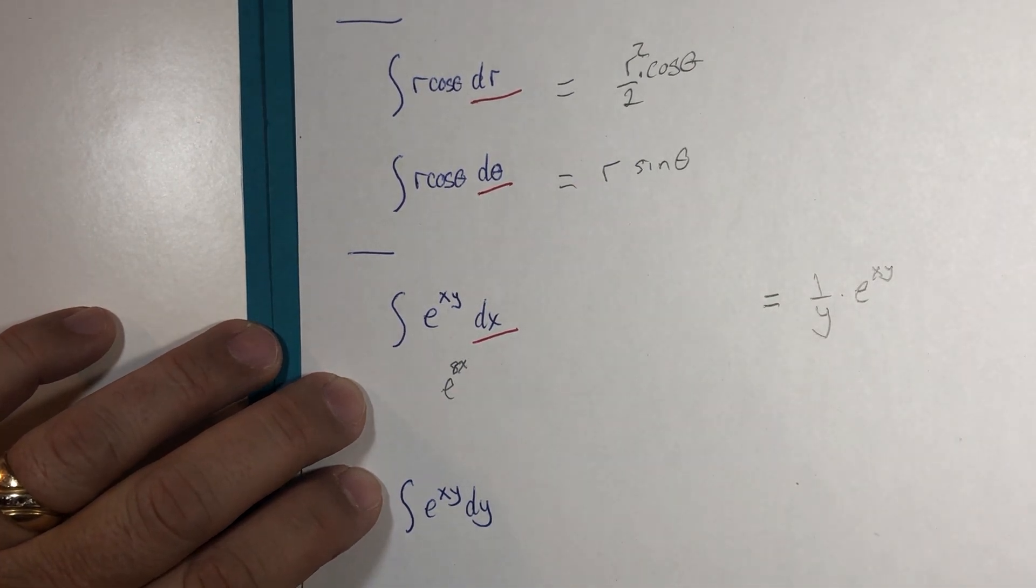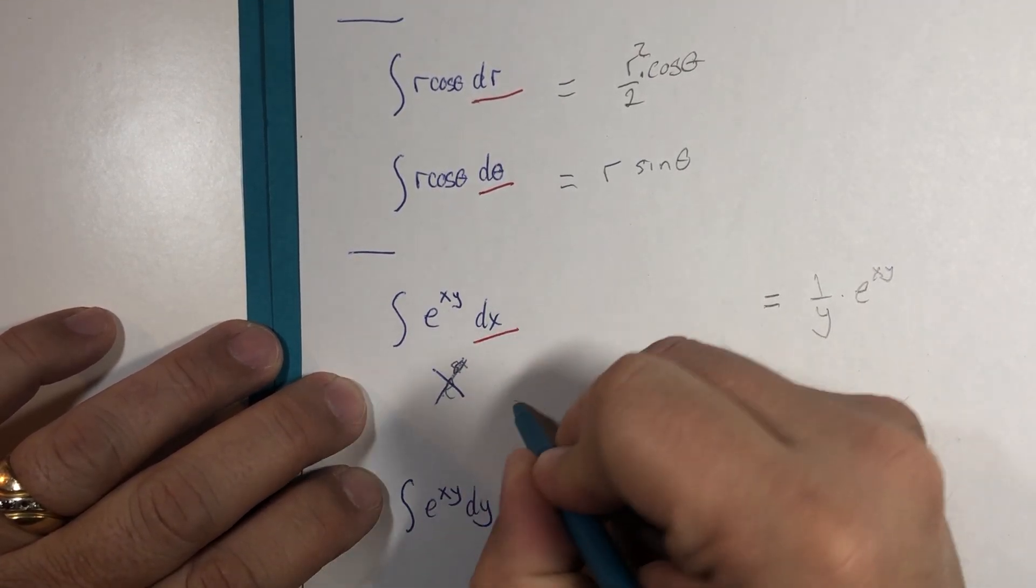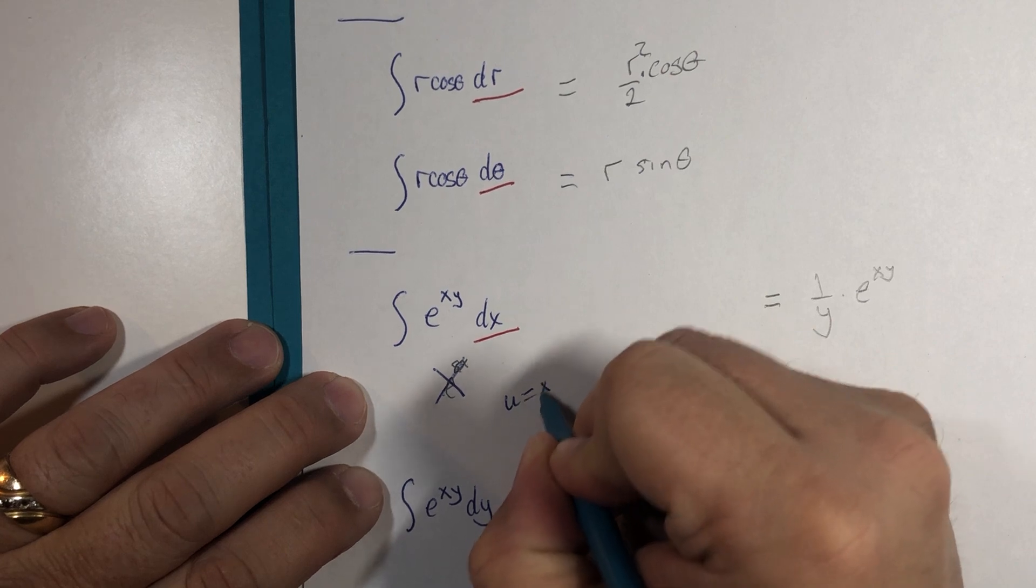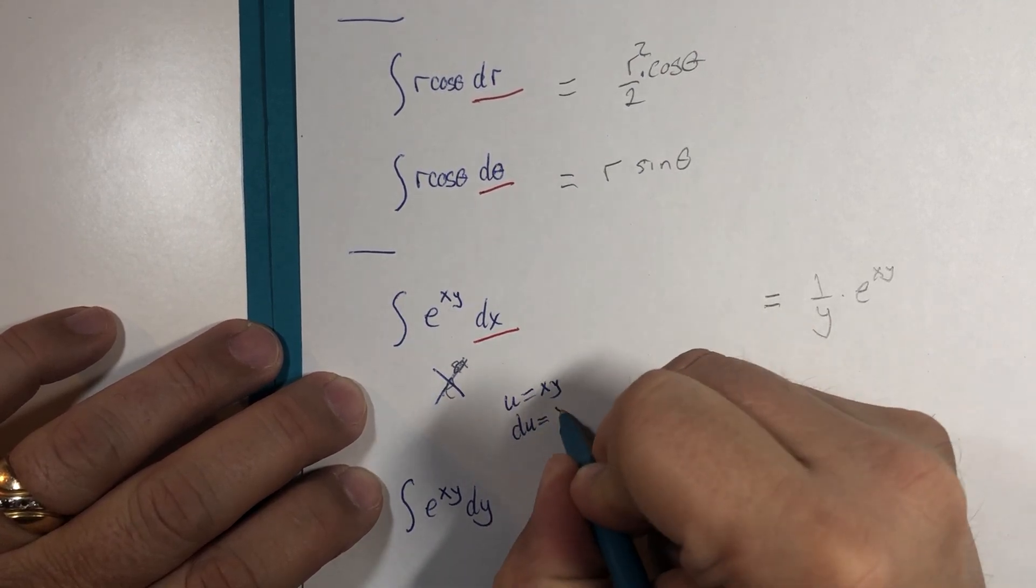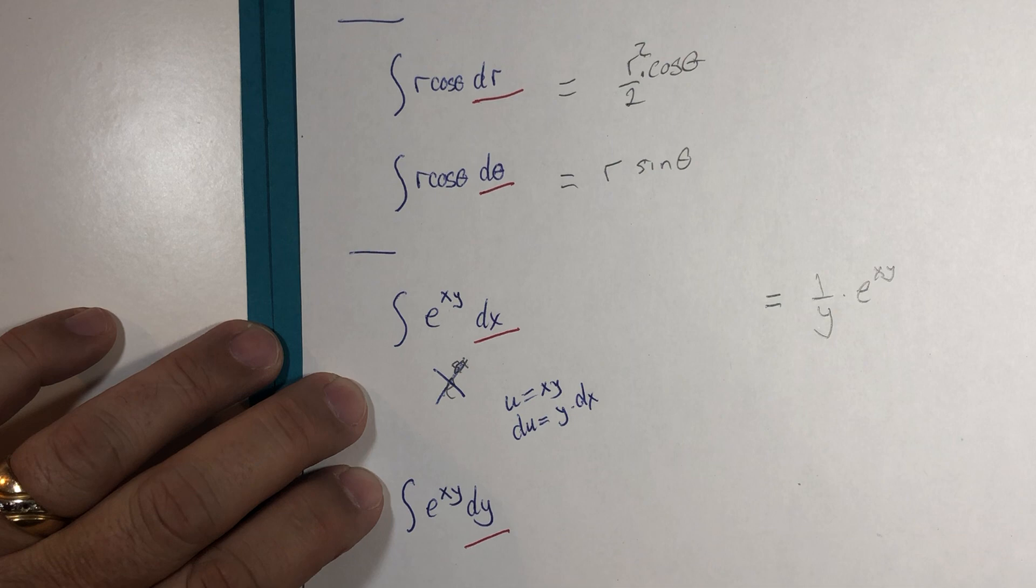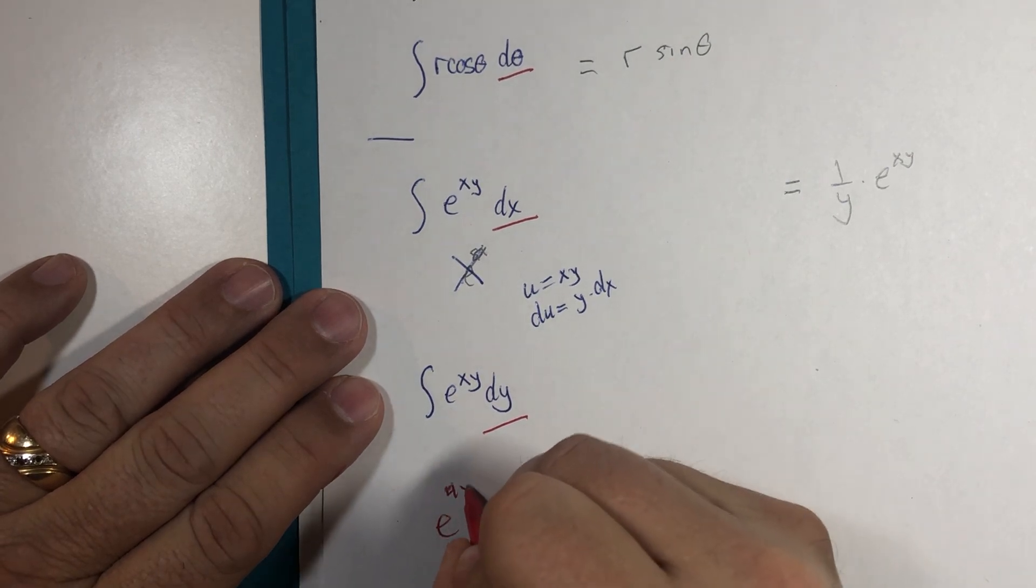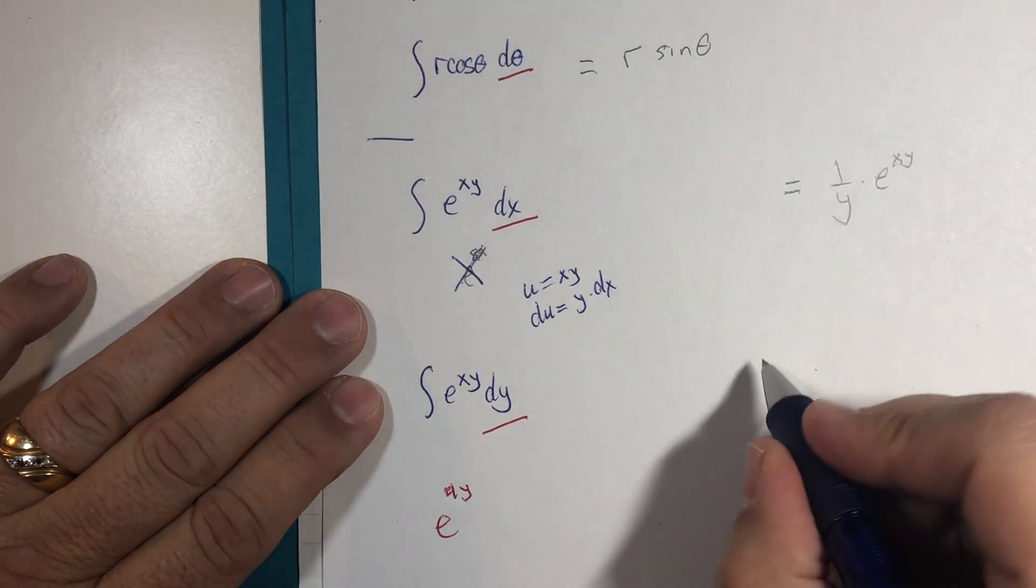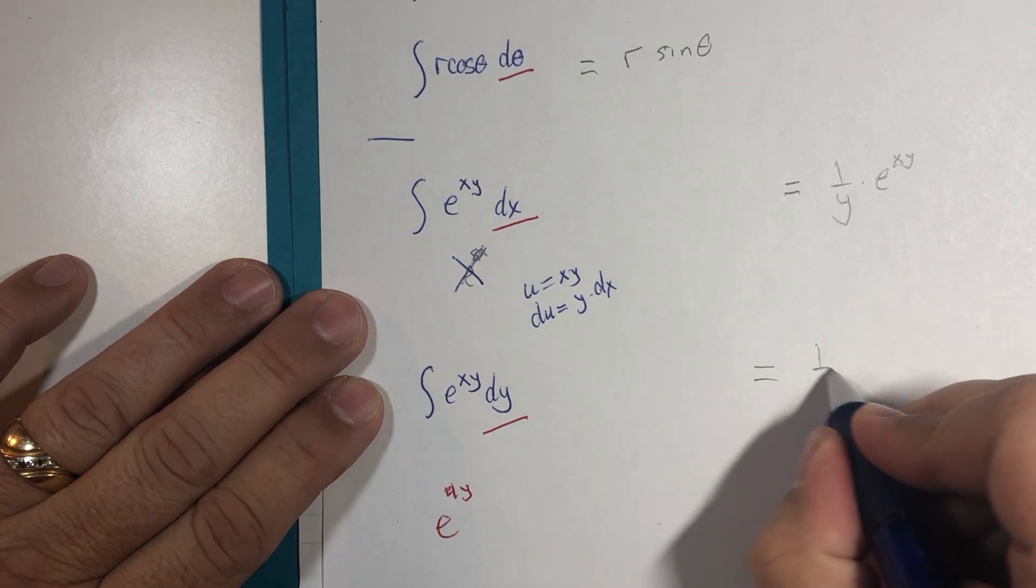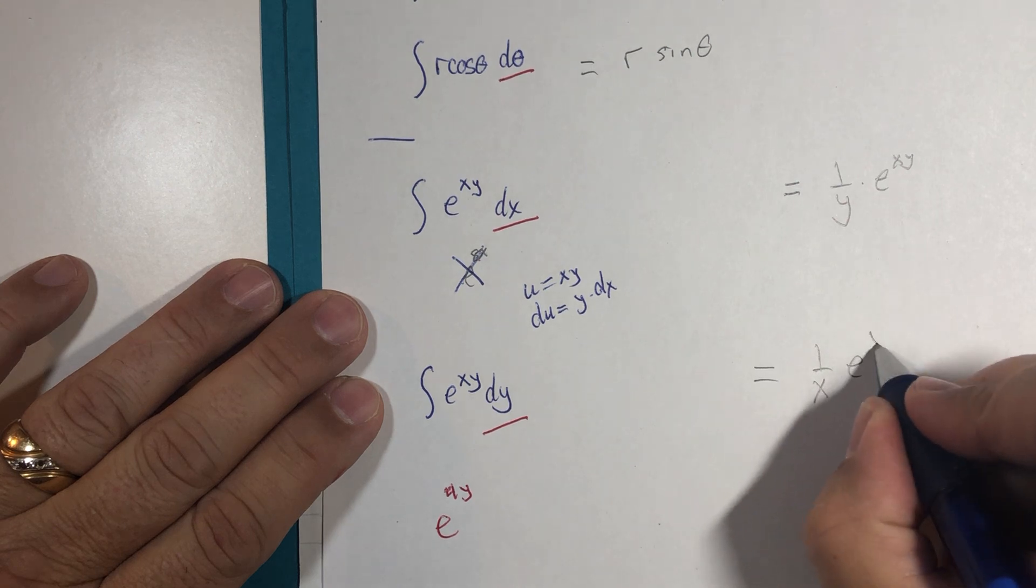You could write this using substitution. Let's get rid of that guy for a moment here. U equals x times y, du equals y times dx because y is a constant. In this problem y is the variable, so now we're integrating something that looks like e to the 4y. Its antiderivative is going to be 1 over x times e to the xy.